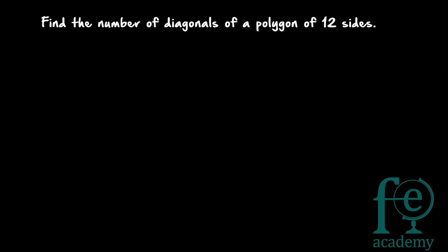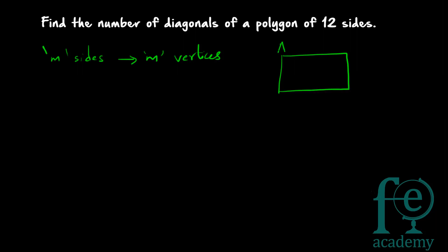Second question: find the number of diagonals of a polygon of 12 sides. Again, let's find the generalized formula first. A polygon of m sides has m vertices. A diagonal is formed by joining two vertices — when you join two vertices you get a diagonal. Starting with a rectangle: you have four vertices and four sides. Joining vertices A and C gives one diagonal, joining B and D gives another diagonal. So you select two vertices from the m vertices — that gives mC2 selections.